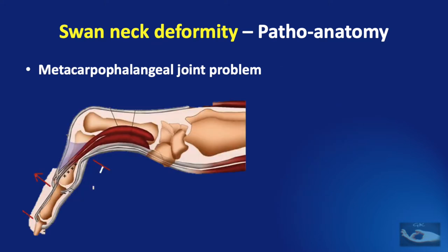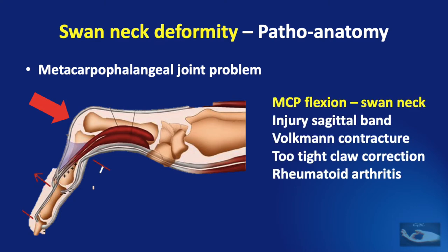Considering the mechanics at the metacarpophalangeal joint: increased force of flexion at the metacarpophalangeal joint can cause the swan neck deformity, and this increased force could be due to injury to the sagittal band, Volkmann's ischemic contracture, too tight a claw correction procedure, or rheumatoid arthritis.